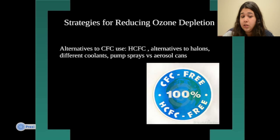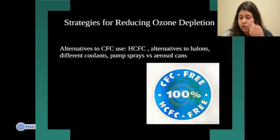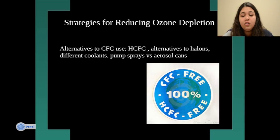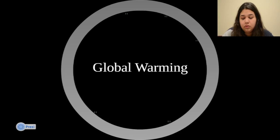There are different strategies for reducing ozone depletion. Alternatives to CFCs include HCFCs, which also cause some ozone depletion but not as severely. There are also alternatives to halons found in CFCs, different coolants, and pump sprays versus aerosol cans — different ways to change CFC use.